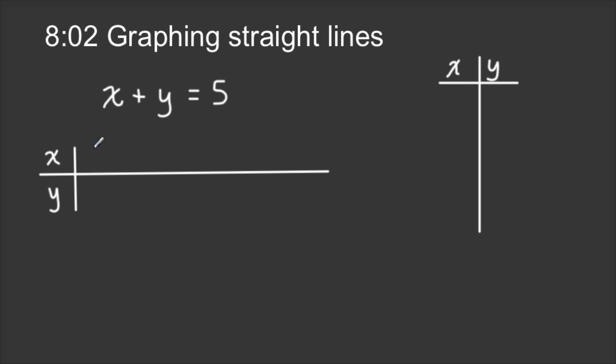So one possible answer is I could say X is 1 and Y is 4, and you'd write that like this vertically, or as coordinate points, I would say the first coordinate is X and the second coordinate is Y.